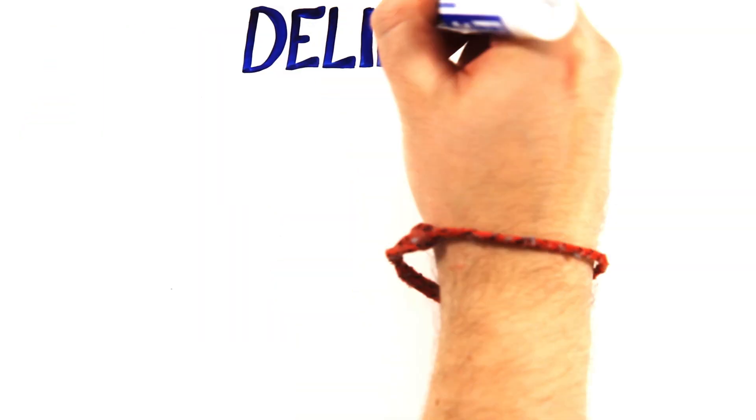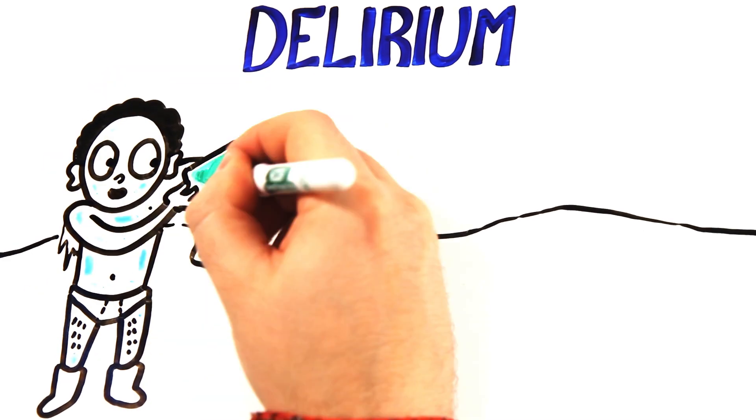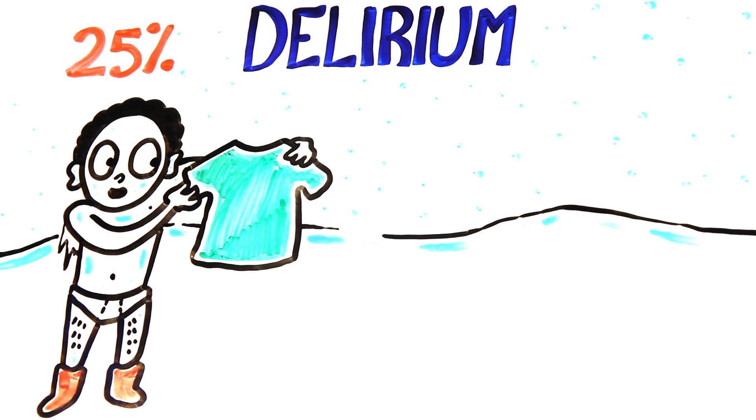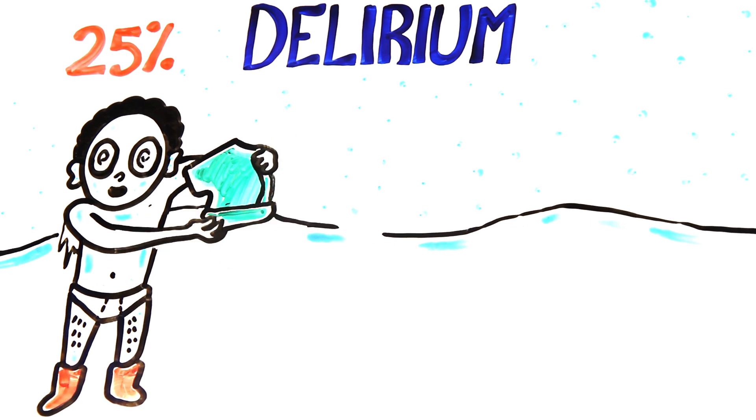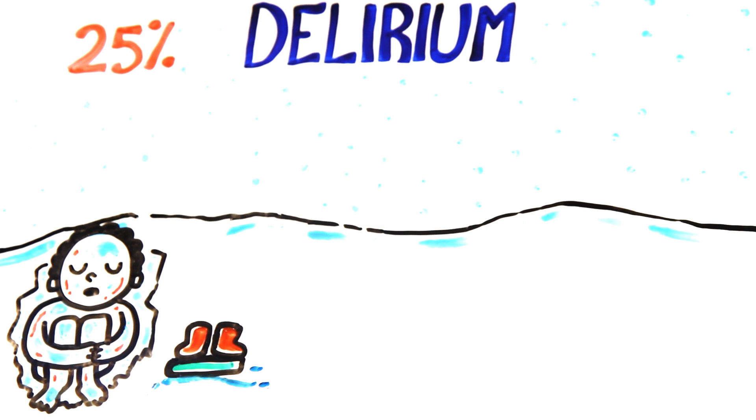One of the last symptoms of advanced stage hypothermia is delirium. A survey of cases in which death was caused by hypothermia found that in 25% of the cases, the victims had undressed before they died. In one case, victims had neatly folded their clothes beside them and froze to death in the snow. Why would this happen?